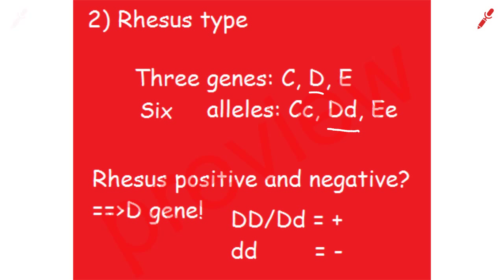When someone says his rhesus positive or negative, he is talking about his D gene rhesus type. Positive means he has one big D or two big Ds. Negative means he has two small Ds.